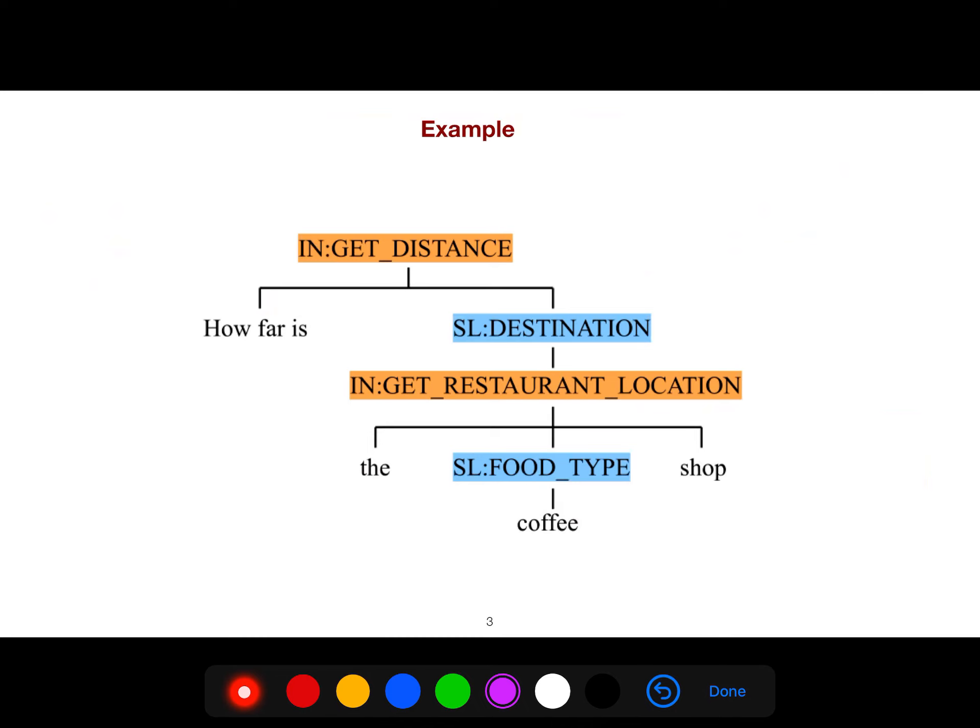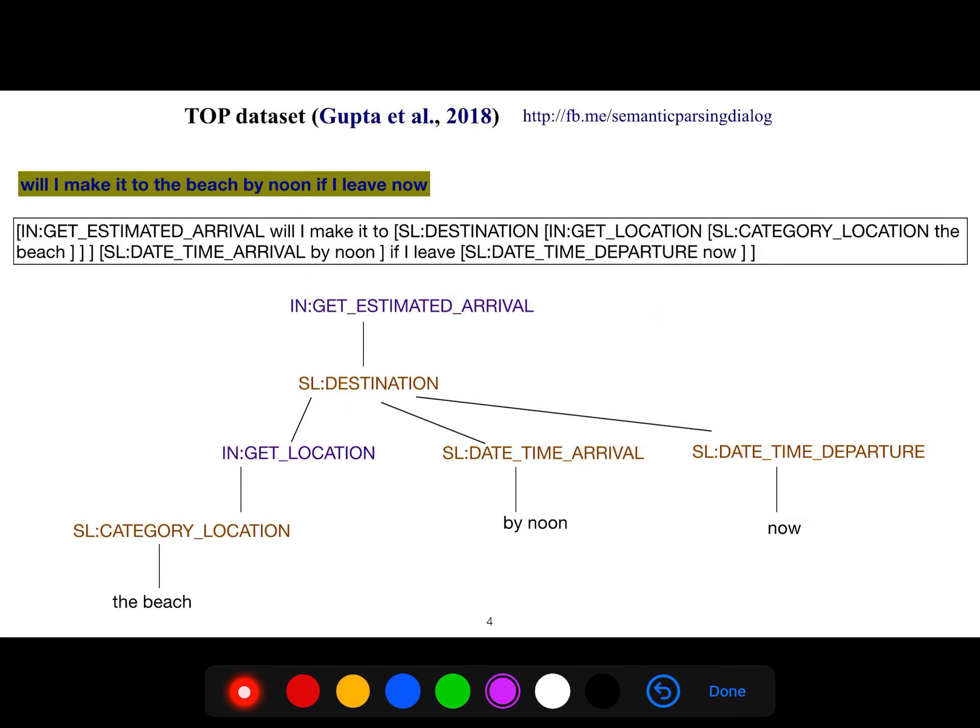This is an example from TOP dataset that great people in Facebook have created, this beautiful dataset. It's a free dataset, open source, everybody can use that, and I use it as well. You see, how far is the coffee shop? You have some intents, you have some slots. One slot could have several intents or slots as well. The TOP dataset is from 2018 in Facebook.